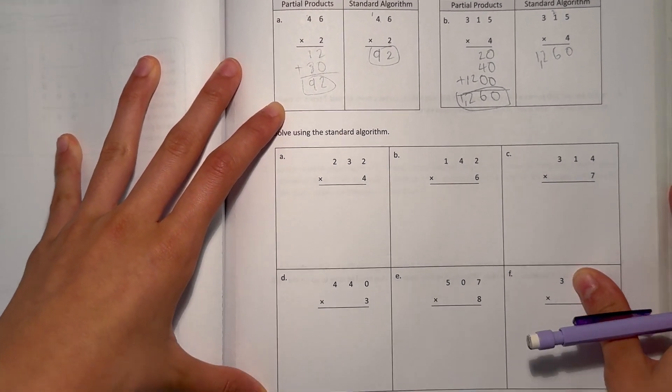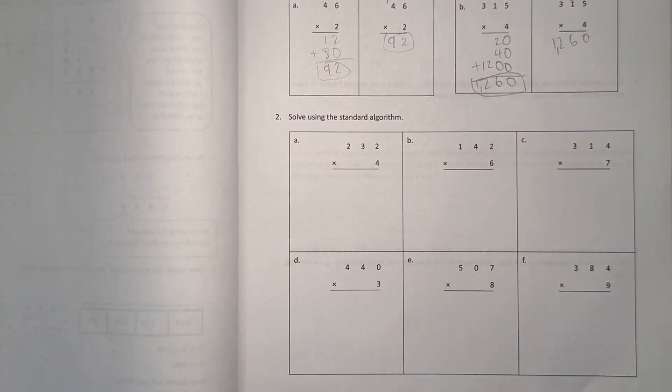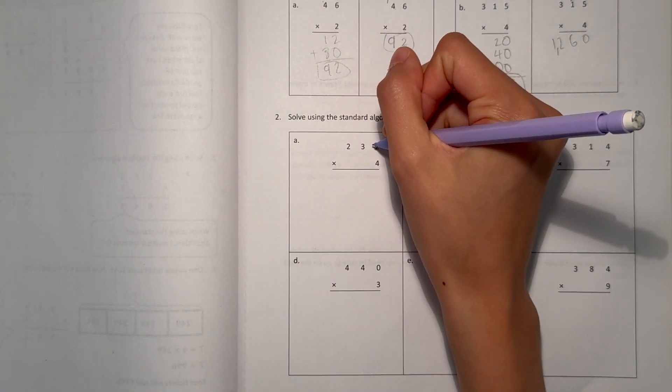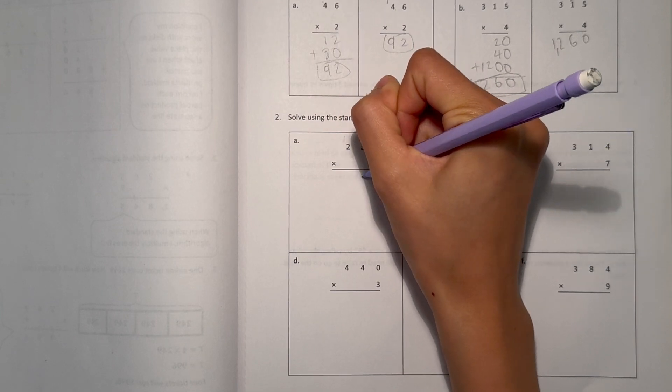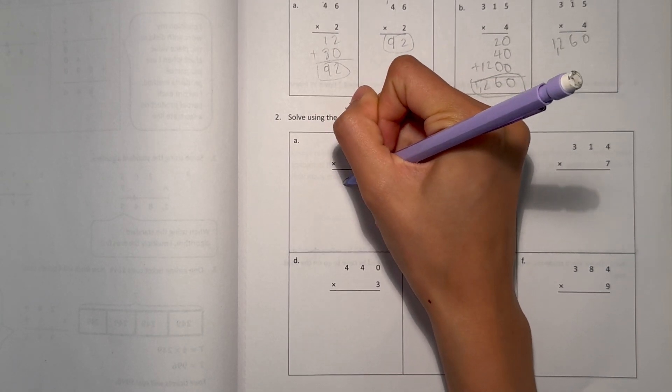Number 2, solve using the standard algorithm. A, 2 times 4 is 8, 3 times 4 is 12, and 2 times 4 is 8, plus 1 is 9.